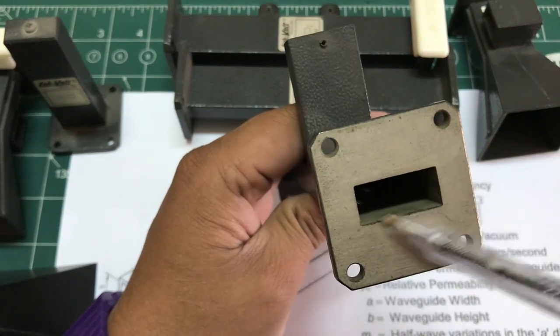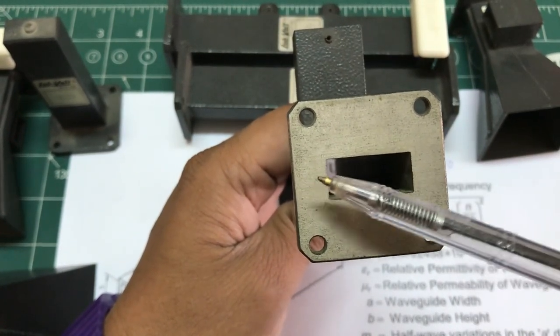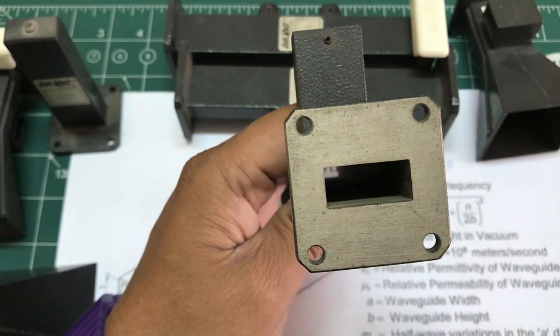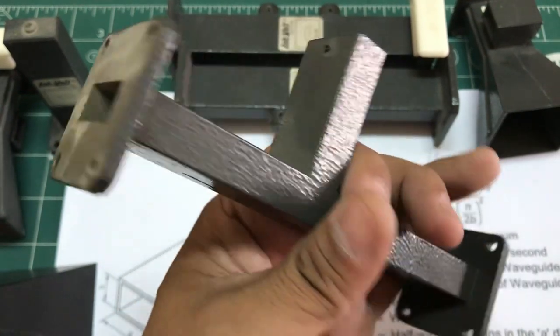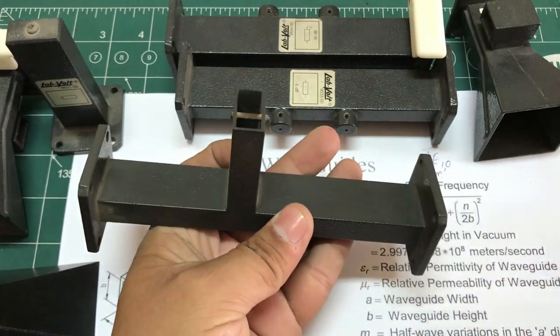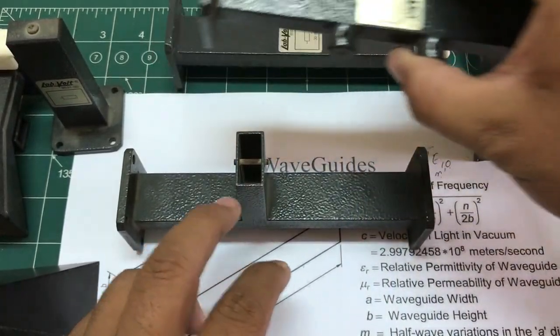If you were to look at this waveguide, this is rectangular waveguide because it is forming a rectangle. You'll also have a circular waveguide as well, but these rectangular waveguides are quite popular. These are sort of like pipes which you can connect them with different assemblies.